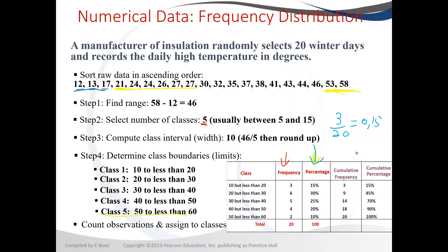To calculate the cumulative frequency, we start with the first frequency that we have. Cumulative frequency is about adding up progressively. In the beginning it starts with the 3 that we have, because less than 20 there are 3. But for those less than 30, we combine both groups — 3 plus 6 gives you the cumulative count for less than 30.